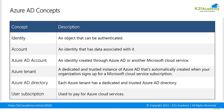Some basic Azure AD concepts: Identity is an object that can be authenticated. An Account is an identity that has data associated with it. An Azure AD Account is an identity created through Azure AD or another Microsoft cloud service. An Azure Tenant is a dedicated trusted instance of Azure AD automatically created when your organization signs up for a Microsoft cloud service subscription — essentially something like your username at a domain name dot onmicrosoft.com. Each Azure tenant has a dedicated and trusted Azure AD directory, and tenant is somewhat equivalent to directory.